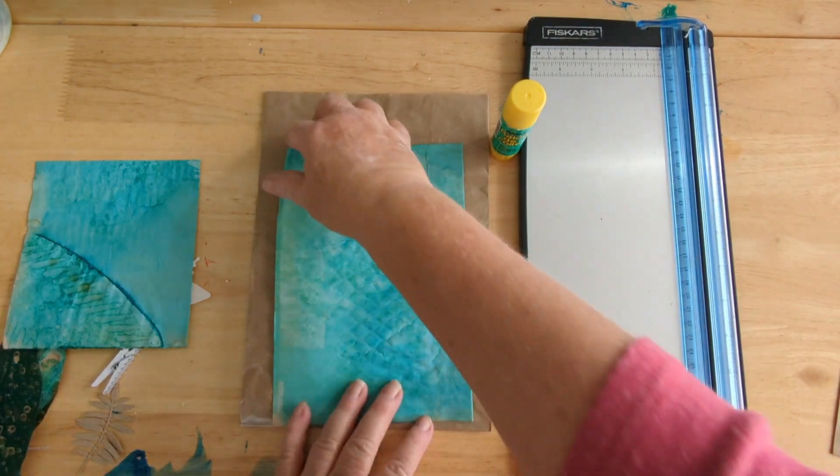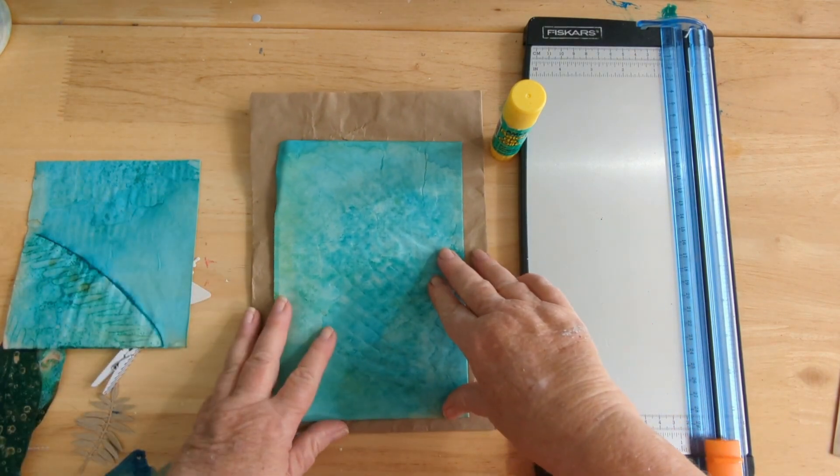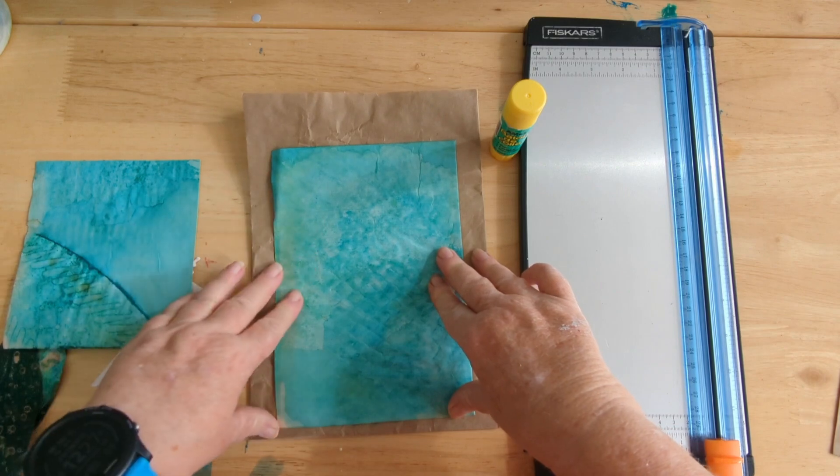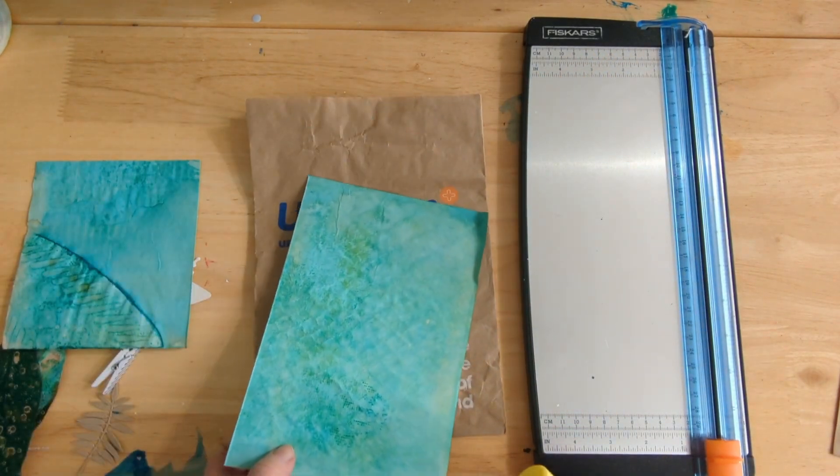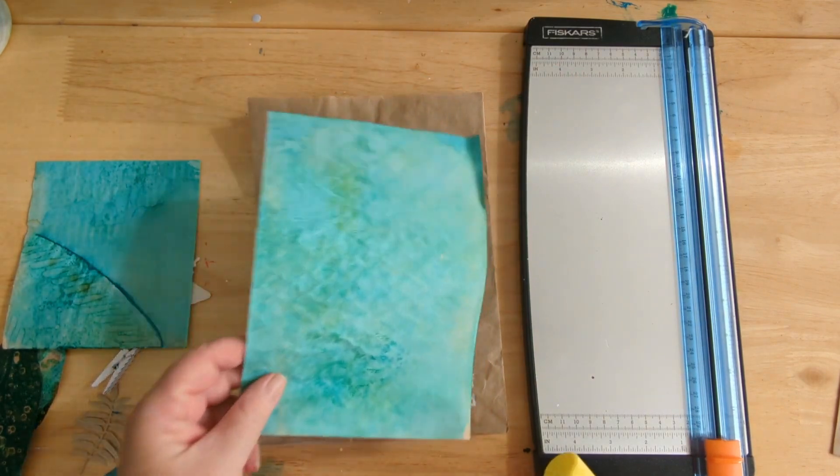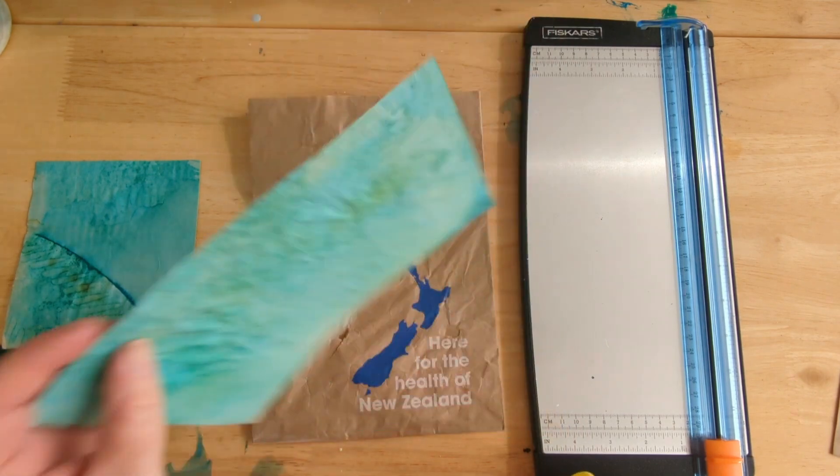Now we need to cover up the writing that's on our bag, so I have an A5 piece of paper here which I'm going to glue on. That side looks better than the other.